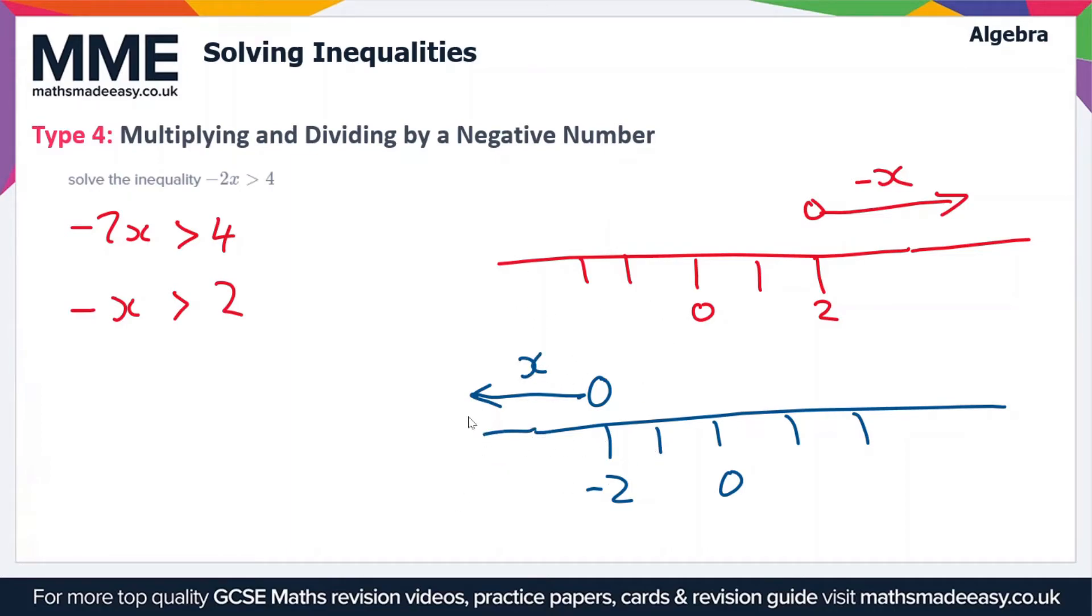So how we would write this is x is less than minus 2. So as you can see, in order to get from this first expression to this second expression, we've divided by minus 1. But when we've done so, the sign of the inequality has changed.